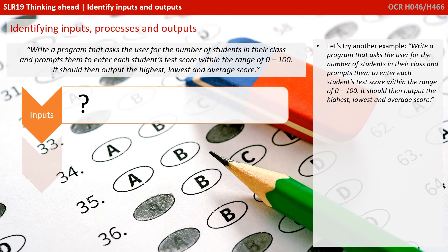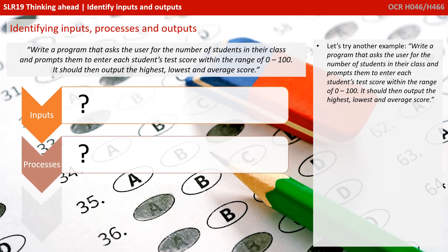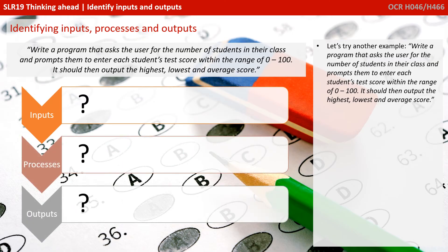Let's look at another example, but this time you have a go. We're going to write a program that asks the user for the number of students in their class and prompts them to enter each student's test score within the range 0 to 100. We should then output the highest, lowest, and average score. Pause the video and figure out what are the inputs and outputs to this system, and what processes have to happen to turn those inputs into the outputs.